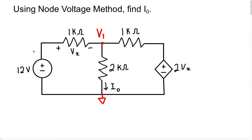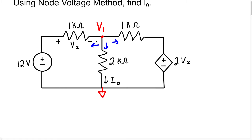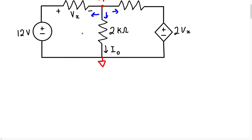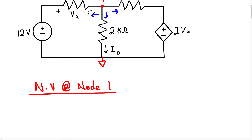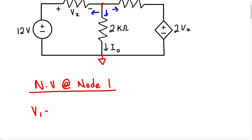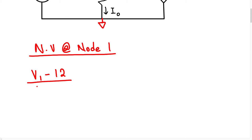Now we're going to write a node voltage equation at node 1. Remember, we're always going to assume the current is leaving this node, so we draw arrows going this way, this way, and that way. For the current in this branch, we're going to have V1 minus 12 divided by 1000. So the current in this branch is V1 minus 12 over 1K, which is 1000.